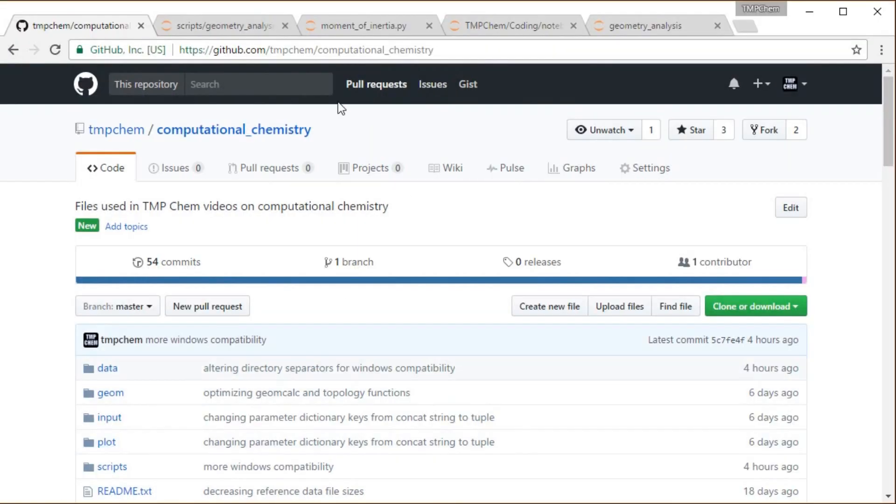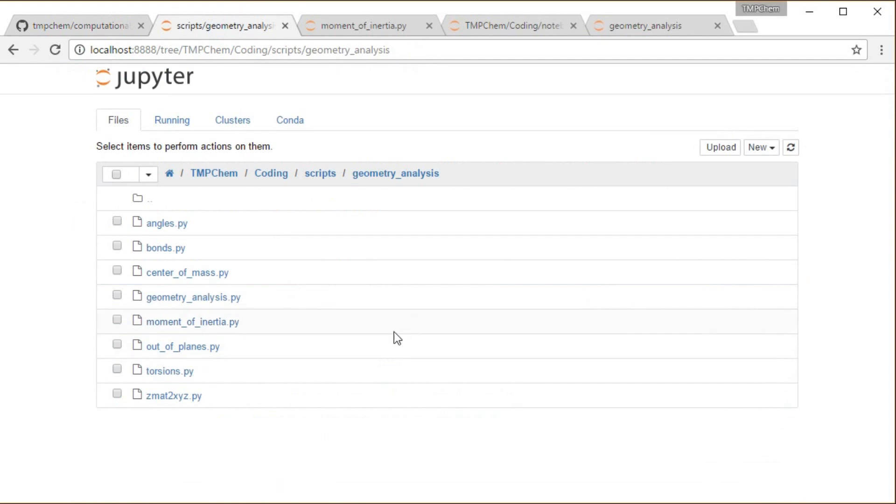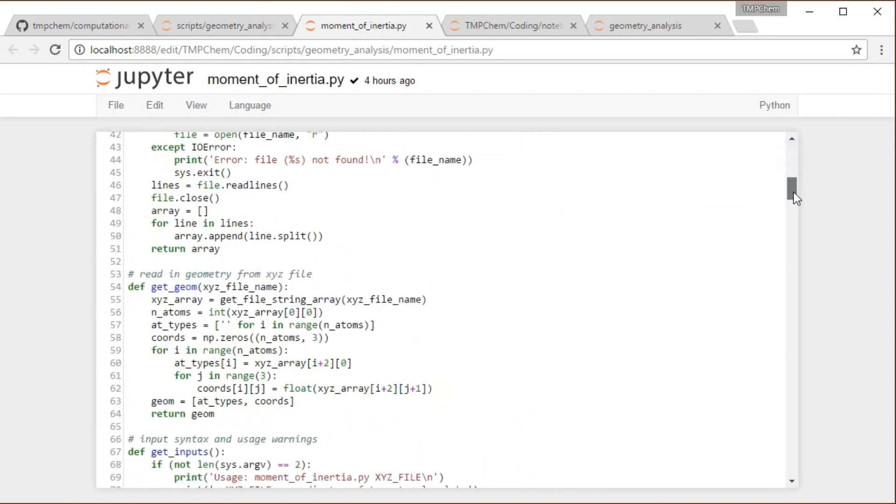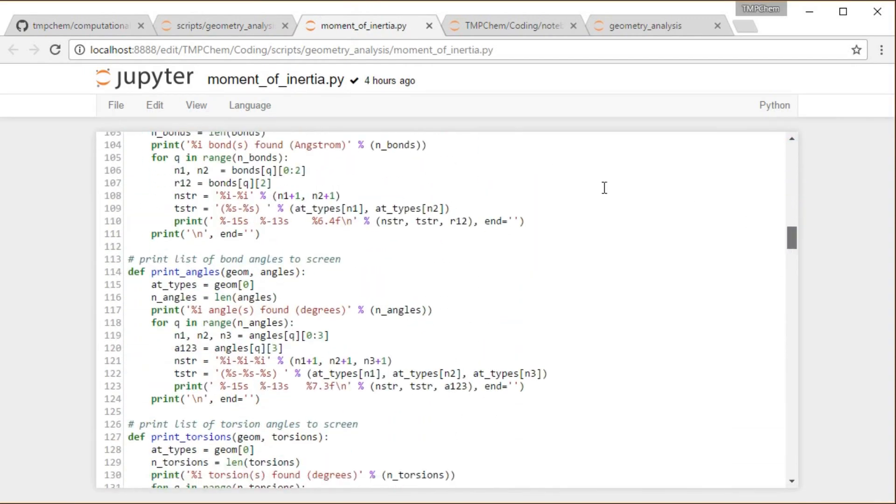We can demo some of this from my github computational chemistry repository as we've been doing throughout this entire chapter. There's a program in there called moment of inertia, which is going to compute some extra things about moment of inertia.